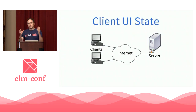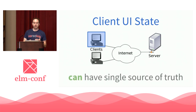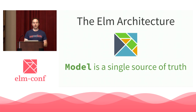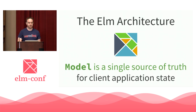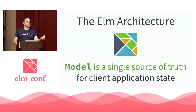So let's draw a smaller box around this. We concluded it's not possible to have a complete client-server application with one single source of truth. But if we narrow it down to just the client UI state, we actually can have a single source of truth. As Elm programmers, we know this — we use the Elm architecture, where the model is a single atomic immutable value that is the single source of truth for the entire client application state.